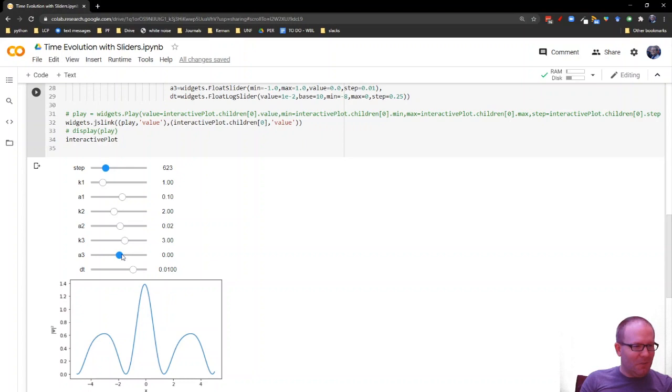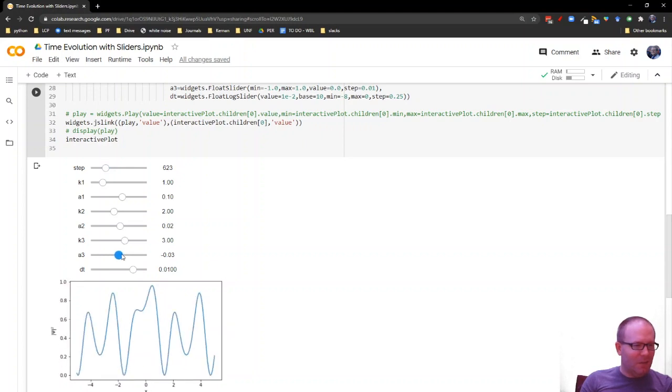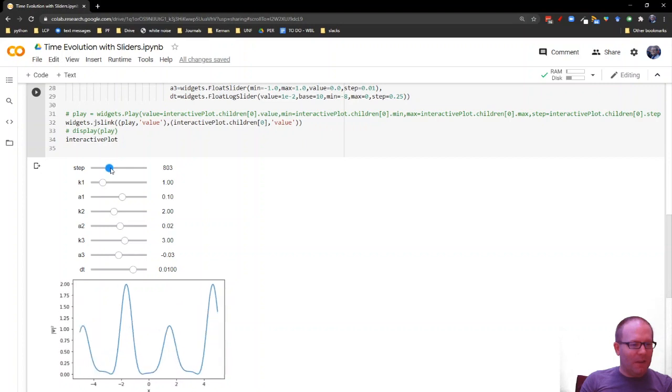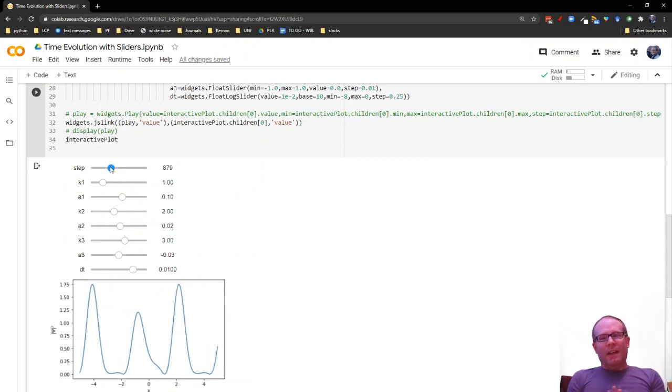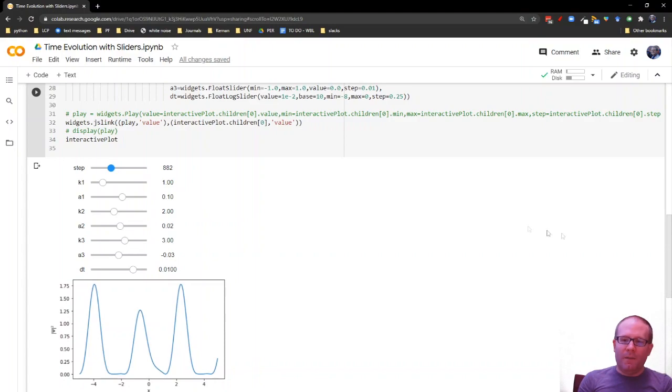Things also get interesting when you bring in a third wave. Let's just have this one go backwards, shall we? So now I've got a wave moving to the left on top of a wave moving to the right, which is pretty neat. So this gives you a general idea of how these wave functions behave.